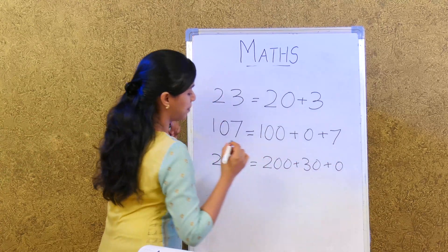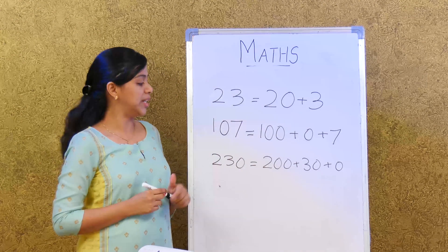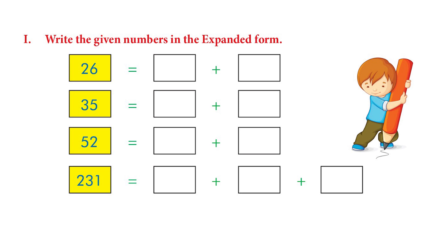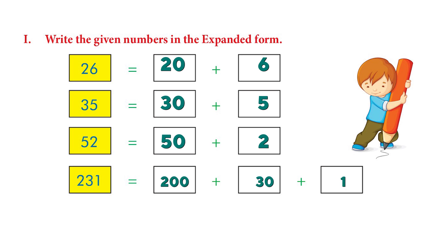Let's go to the activity on page 62. Twenty-six is 20 + 6. Thirty-five is 30 + 5. Fifty-two is 50 + 2. Two hundred and thirty-one is 200 + 30 + 1. Very good — that is the expanded form.